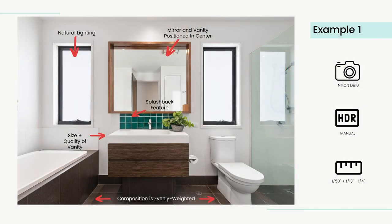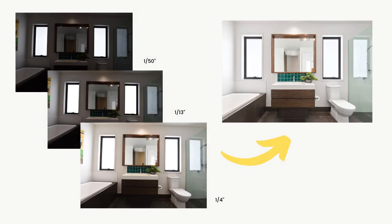Example 1. This bathroom image was captured using a Nikon D810 on a tripod approximately 1.2 meters off the ground. Three exposures were captured manually: an optimal exposure of 1/13 of a second, an underexposed image at 1/50 to reduce brightness in the frosted windows, and an overexposed image at a quarter of a second to bring out details in darker areas like the tiled flooring. The composition positions the bathroom vanity and sink in the center of the frame, with the toilet, shower, and bath evenly balanced on either side.